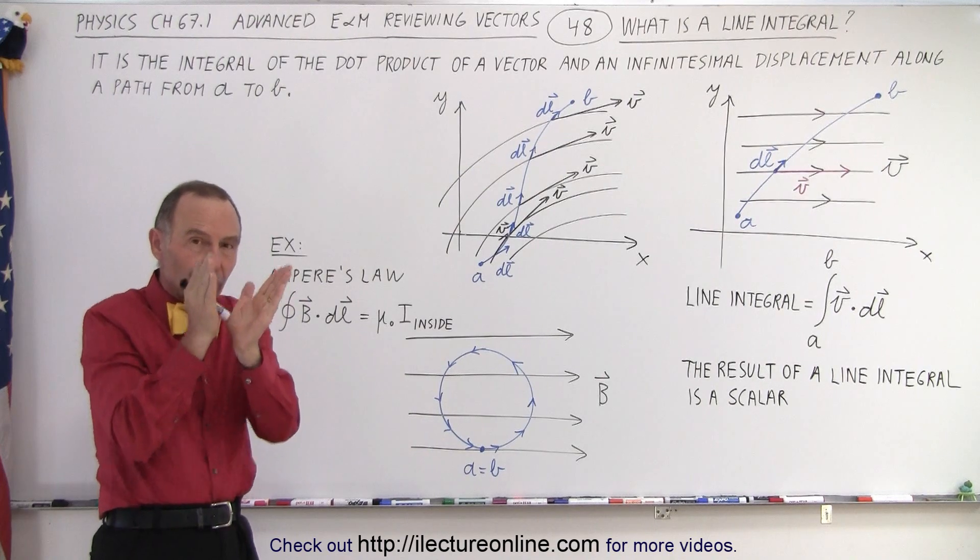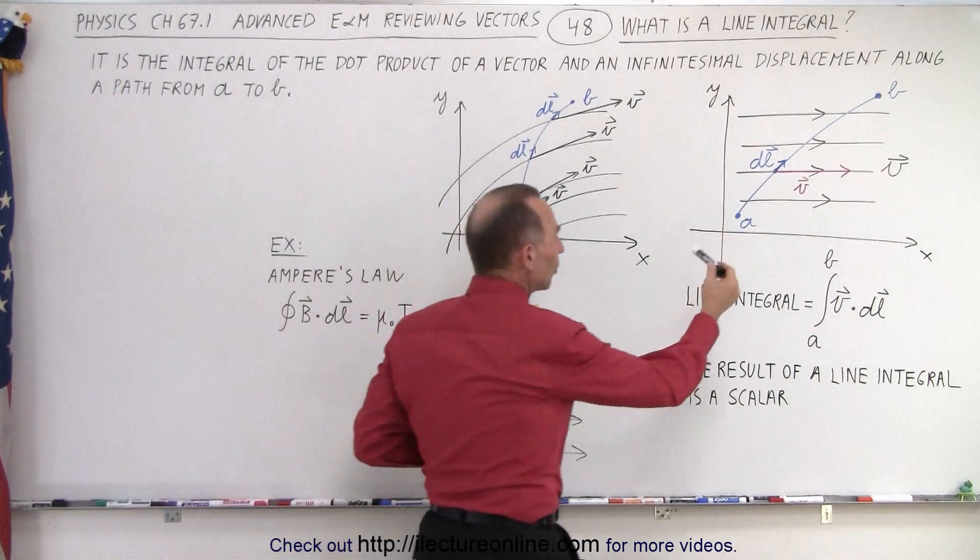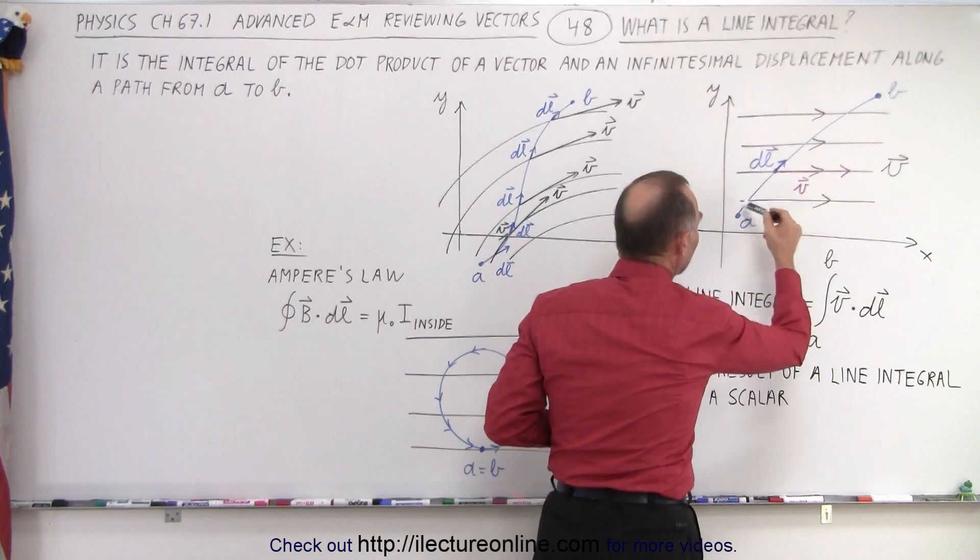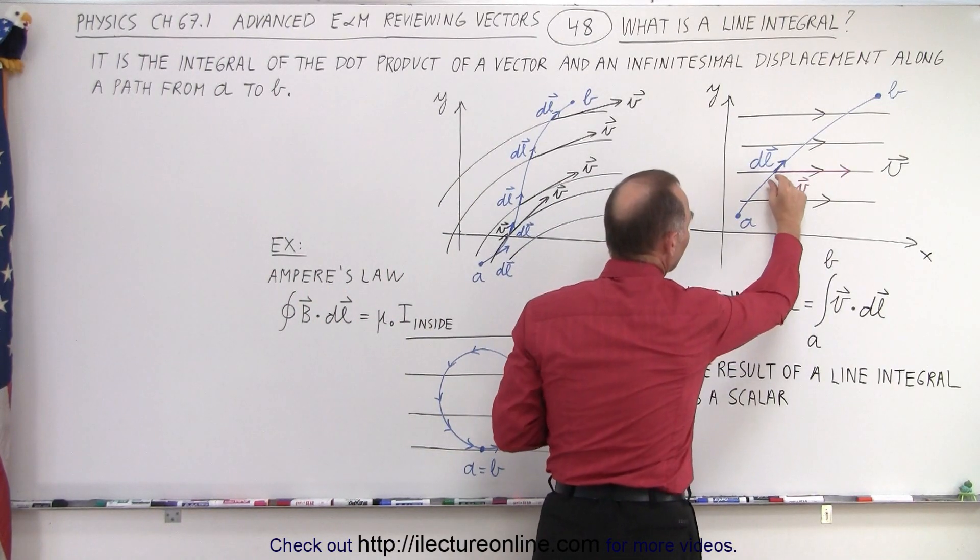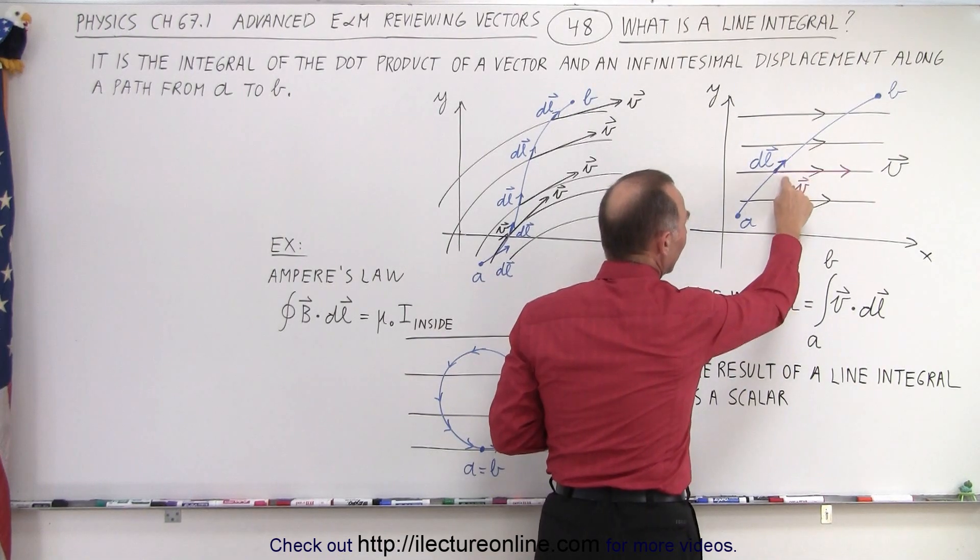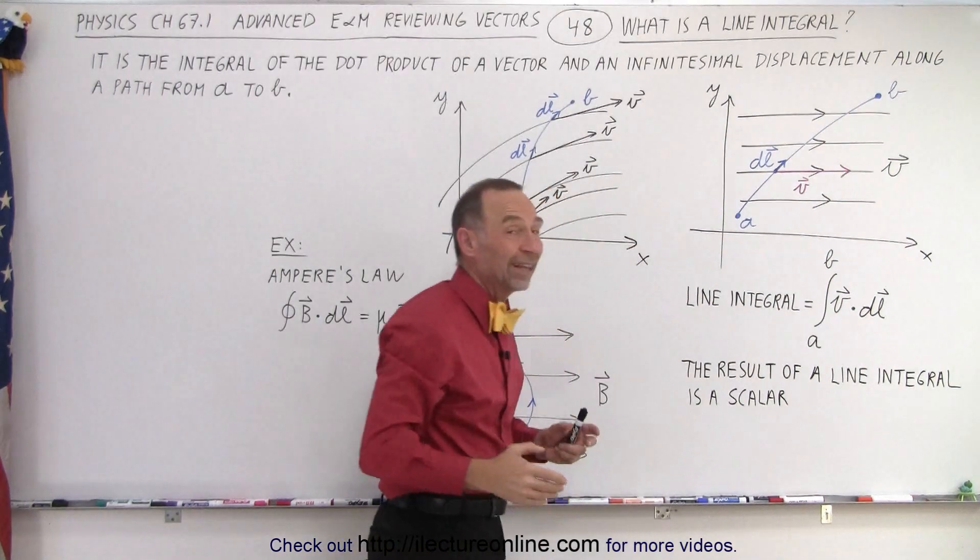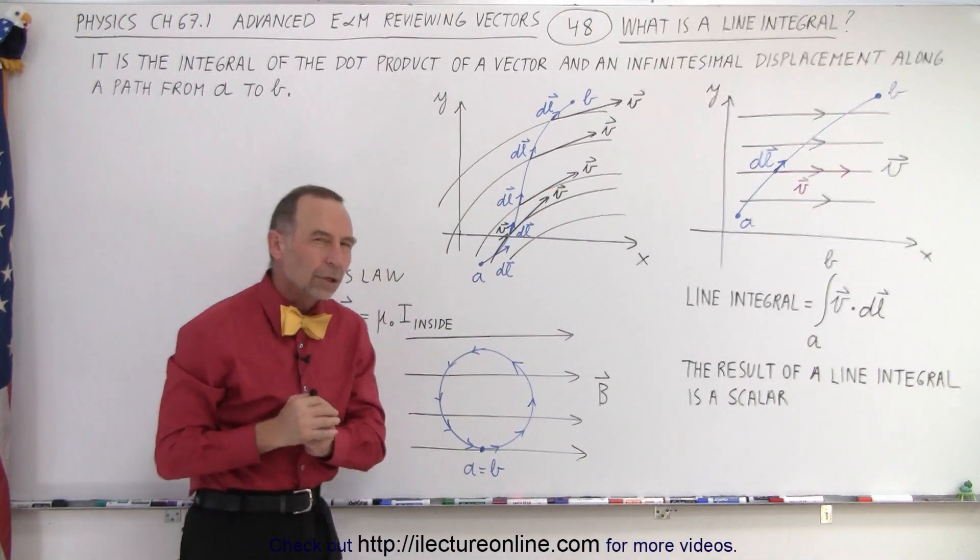So you do a dot product, then you move a little bit further, do a dot product again, move a little bit further. So essentially what you do is you move along a path and each time when you move a small amount of distance dL, you multiply the dL with the vector, you get a dot product, and then you sum up all those dot products and that's what we call a line integral.